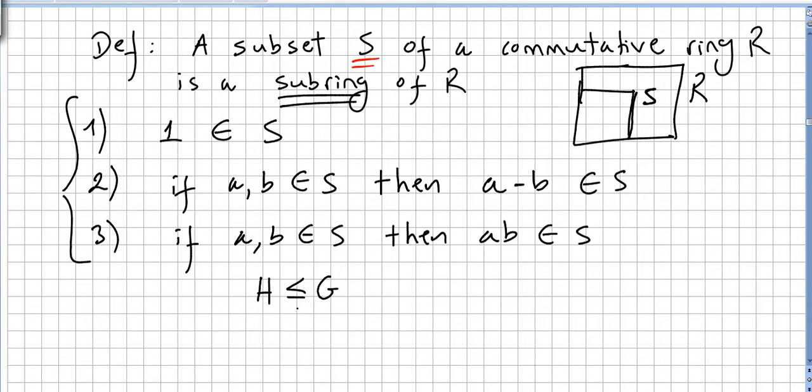Well, in ring theory we can adapt the notation. So if S is a sub-ring of R, we use the same notation as in set theory. S here in the commutative ring context will mean a sub-ring of R.